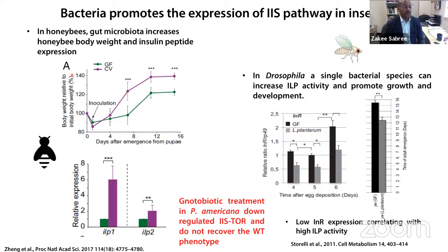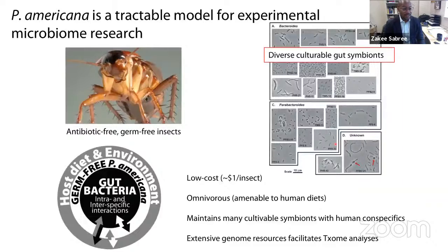This is in contrast to what's shown in honeybees or Drosophila, where you have actually much less complex microbial communities — and in the case of Drosophila, the return of just one of those taxa is sufficient for recovering near wild-type levels of expression within these insulin signaling pathways.